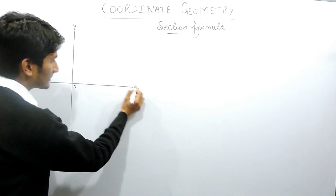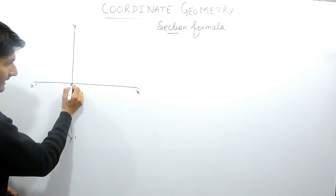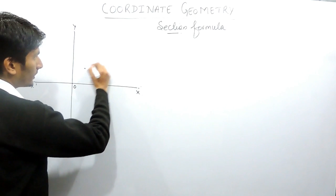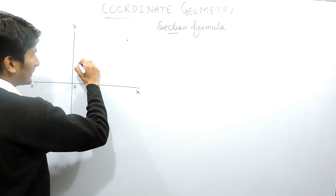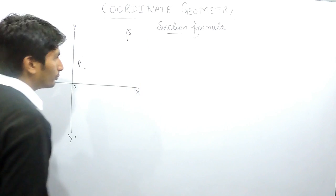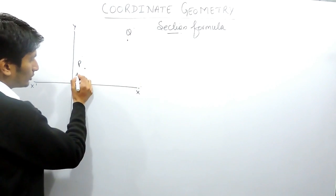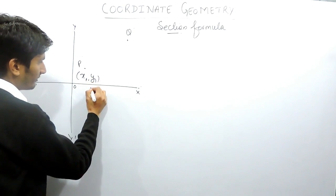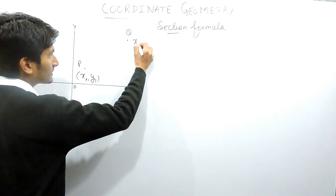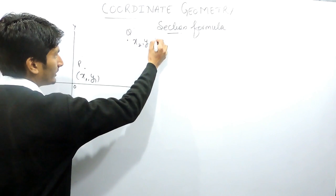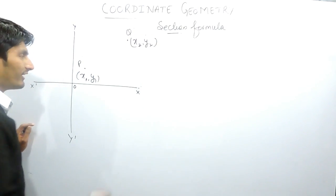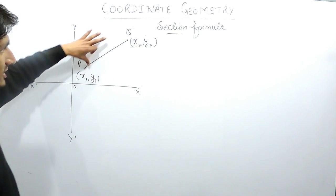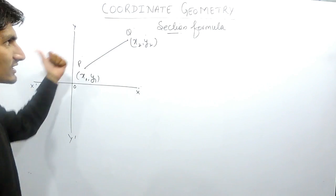This is the x-axis, this is the y-axis, and this is known as the origin. In this coordinate system, if I'm considering P and Q as two points, the coordinate of P is x1, y1 and the coordinate of Q is x2, y2. If I join them, I can find the distance between P and Q using the distance formula.